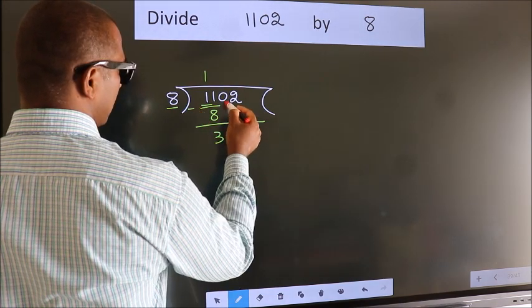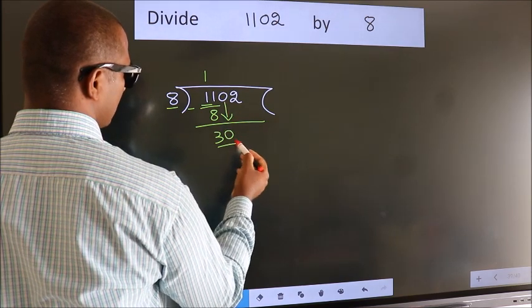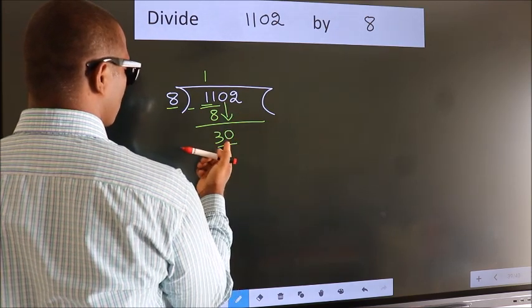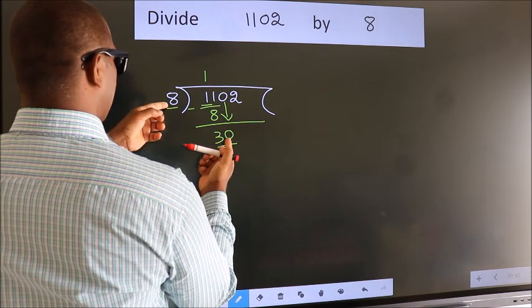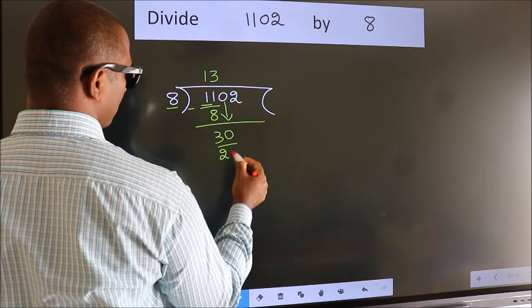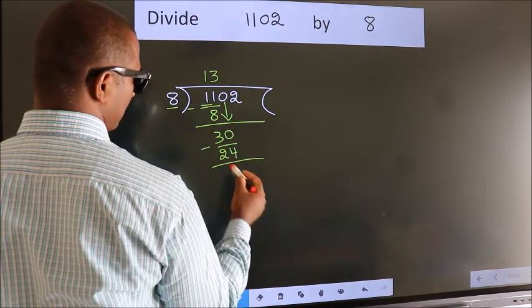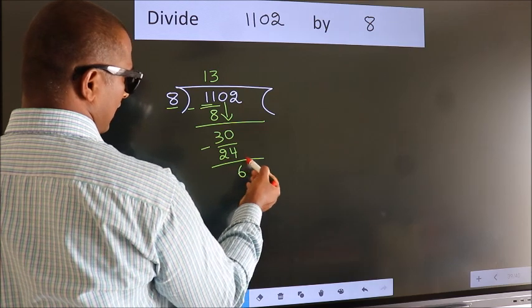After this, bring down the beside number. So 0 down. So 30. A number close to 30 in the 8 table is 8 3s 24. Now we subtract. We get 6.